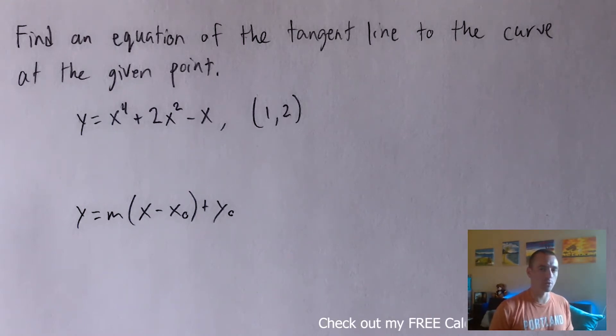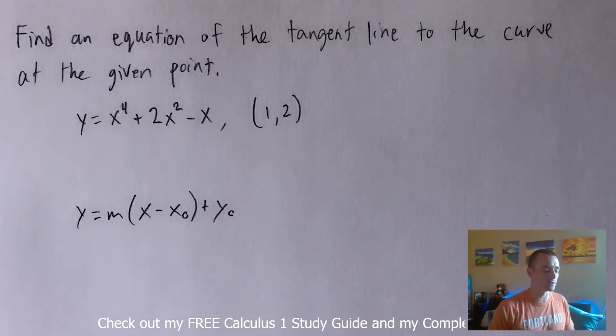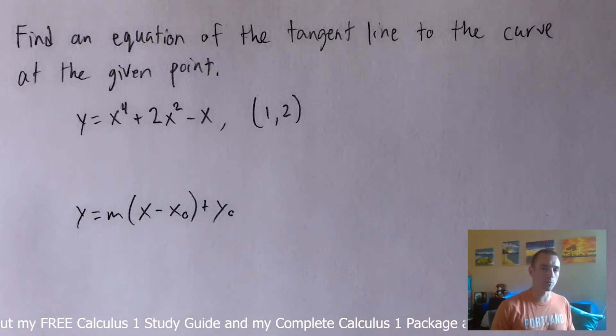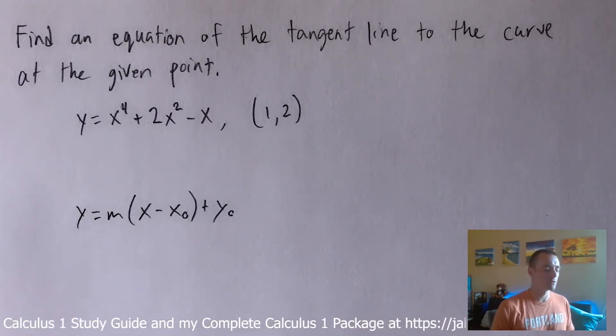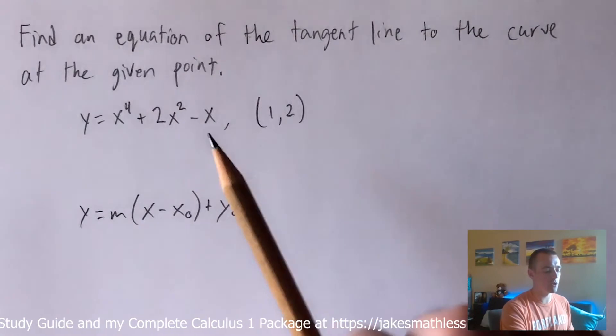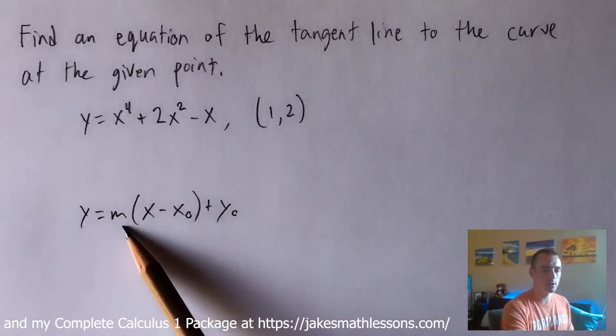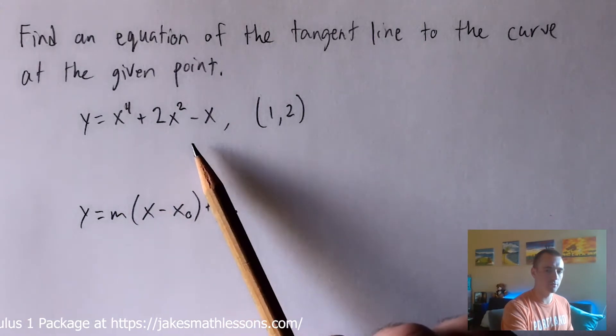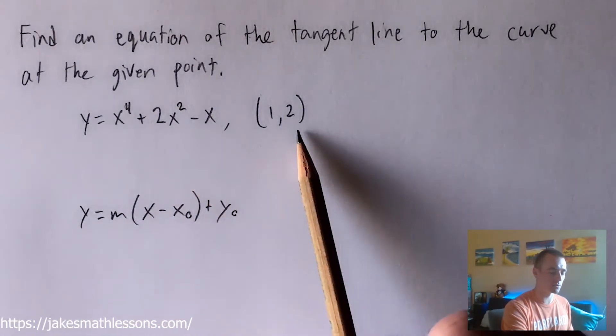And the other piece of information that we know about this tangent line as a result of the fact that it is a tangent line, in other words what we know about tangent lines in general is that they have the same slope as your function at that point where they are tangent to it. So what that means is we know that this line has to have the same slope as this curve at the point x equals 1, y equals 2.